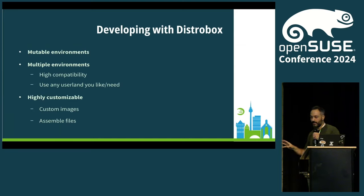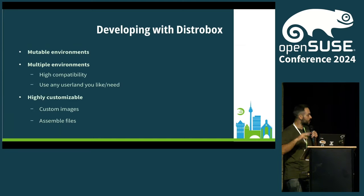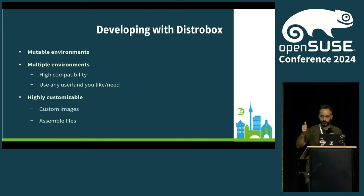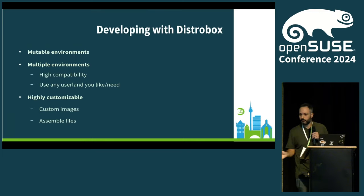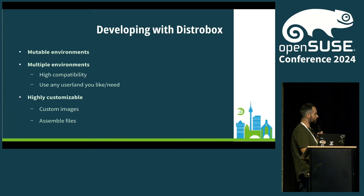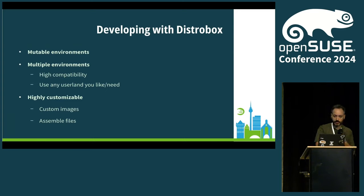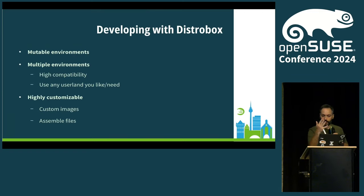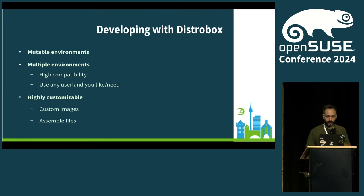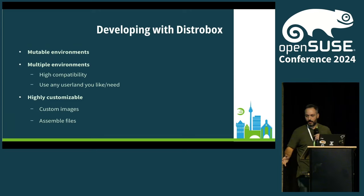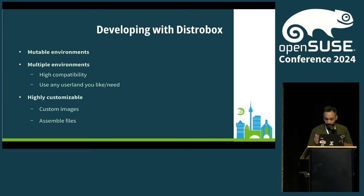You have your immutable distribution — super reliable, super rolling — but I need to work. I need to install stuff, I need SDKs, terminal applications, GUI applications. With DistroBox we can have mutable environments, multiple environments — diverse distributions or diverse snapshots. Maybe you want to test something on Tumbleweed or a snapshot from a couple of weeks ago. And you can highly customize these environments.